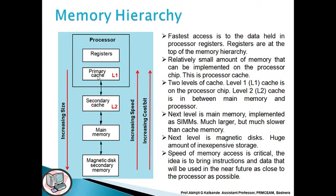The next important element is the primary cache — L1 cache — which is another memory unit at level 1. After that, moving away from the processor, we have the secondary cache at level 2. Then comes main memory, and finally at the last level is the magnetic disk, or secondary memory — which includes magnetic disks, floppy disks, memory cards, and similar storage devices.